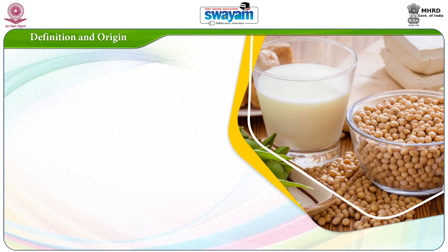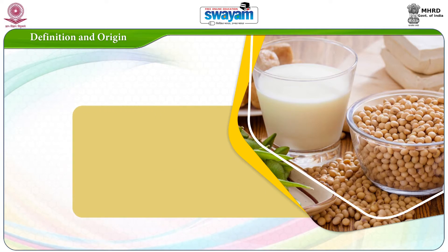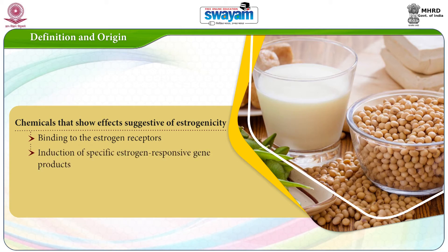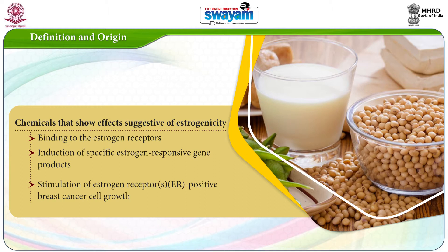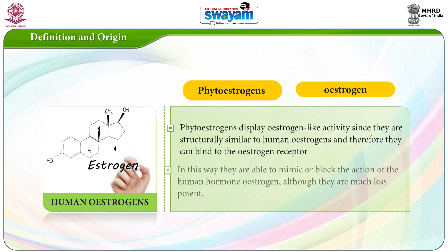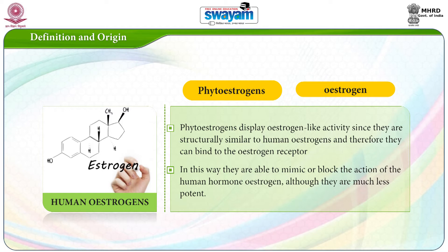Defined broadly, phytoestrogens refer to chemicals that show effects suggestive of estrogenicity, such as binding to the estrogen receptors, inducing specific estrogen-responsive gene products and stimulation of estrogen receptor-positive breast cancer cell growth. Phytoestrogens display estrogen-like activity since they are structurally similar to endogenous estrogens and therefore they can bind to the estrogen receptors. In this way, they are able to mimic or block the action of the human hormone estrogen, although they are much less potent.